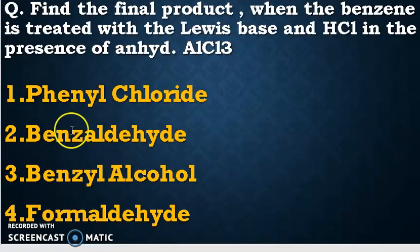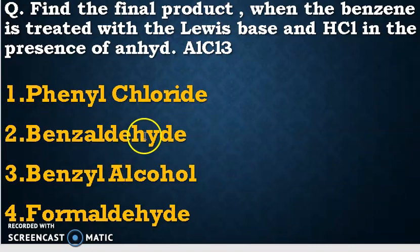Looking at the options — phenyl chloride, benzaldehyde, benzyl alcohol, and formaldehyde — the correct answer is benzaldehyde. I think you have understood the question, the answer, and the reason why we get benzaldehyde as the final product: how the carbocation forms through the resonance structure and why the benzene ring acts as a nucleophile. Please like, share and subscribe our channel and click the bell icon for daily notifications. Thank you so much.